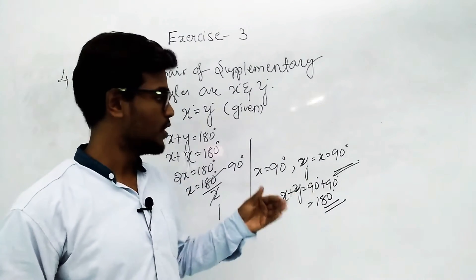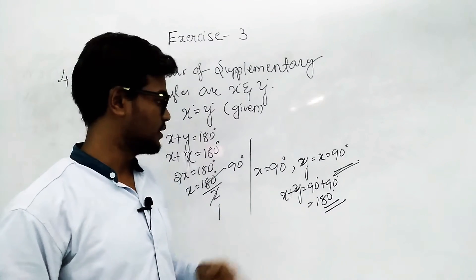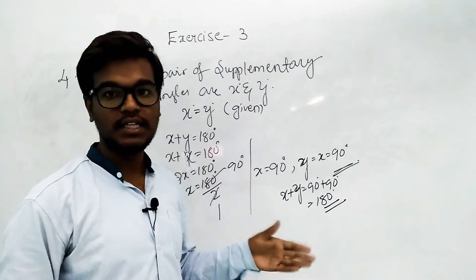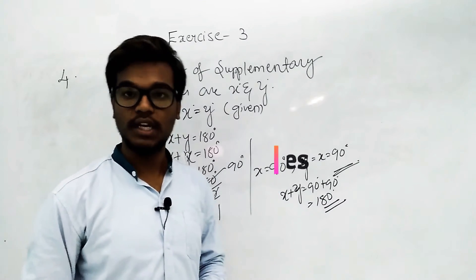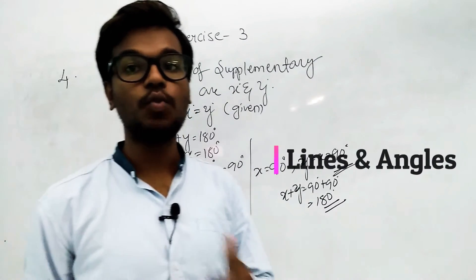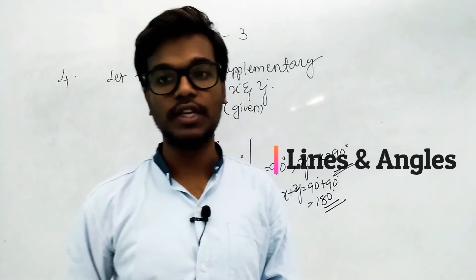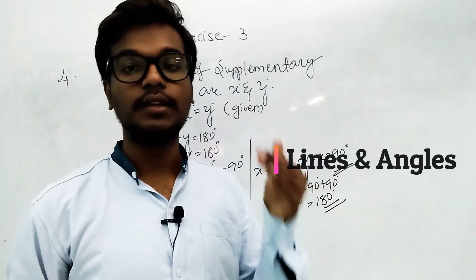And y is also equals to 90 degrees. So if you do x plus y, 90 plus 90 will get 180 degrees. So here x and y are supplementary to each other and they are equal, that will be constant always, equal to 90 degrees.